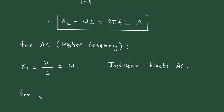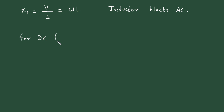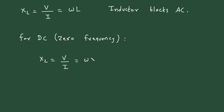For DC, the frequency is zero. So XL equals V/I equals ωL equals zero, meaning the opposition to current is zero. Therefore, an inductor allows DC to pass through.